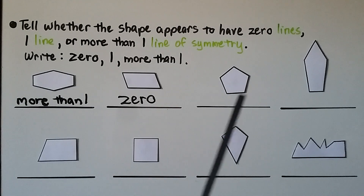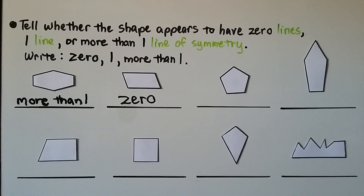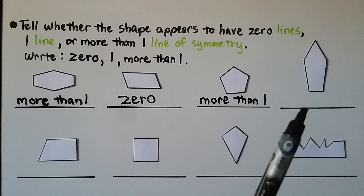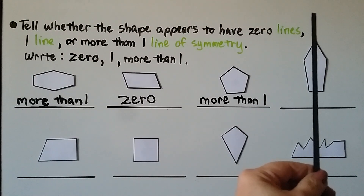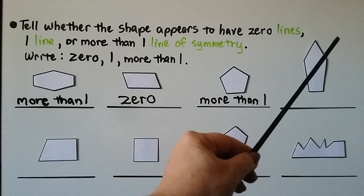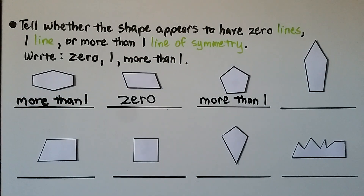A long, skinny pentagon does not have five equal sides or five equal angle measures. A vertical line of symmetry works, but horizontal and diagonal do not make mirror images. So this irregular pentagon has one line of symmetry.